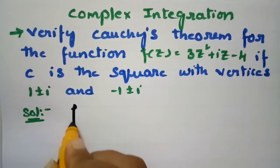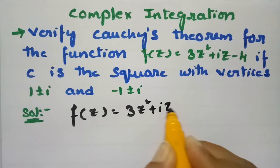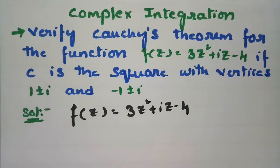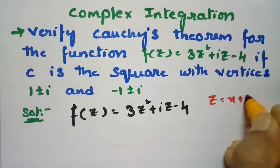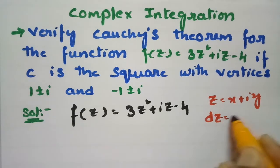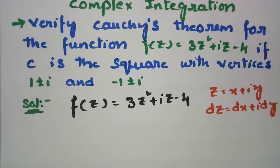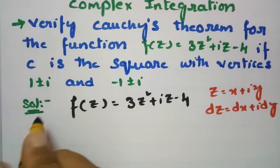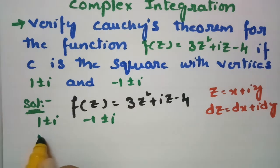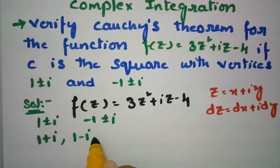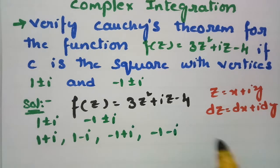The function f(z) is given as 3z² + iz - 4. As you know, z = x + iy and dz = dx + i·dy. The vertices are 1+i, 1-i, -1+i, and -1-i.